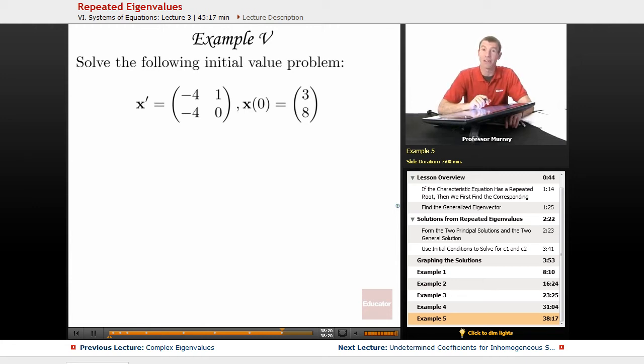So, in Example 5, we're going to solve the initial value problem: the matrix negative 4, 1, negative 4, 0, and x of 0 is equal to 3, 8.